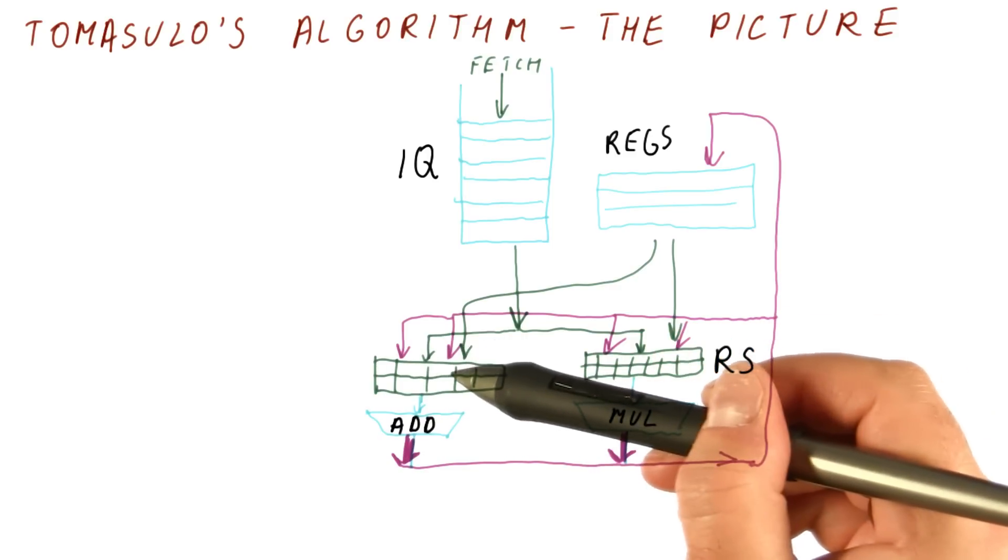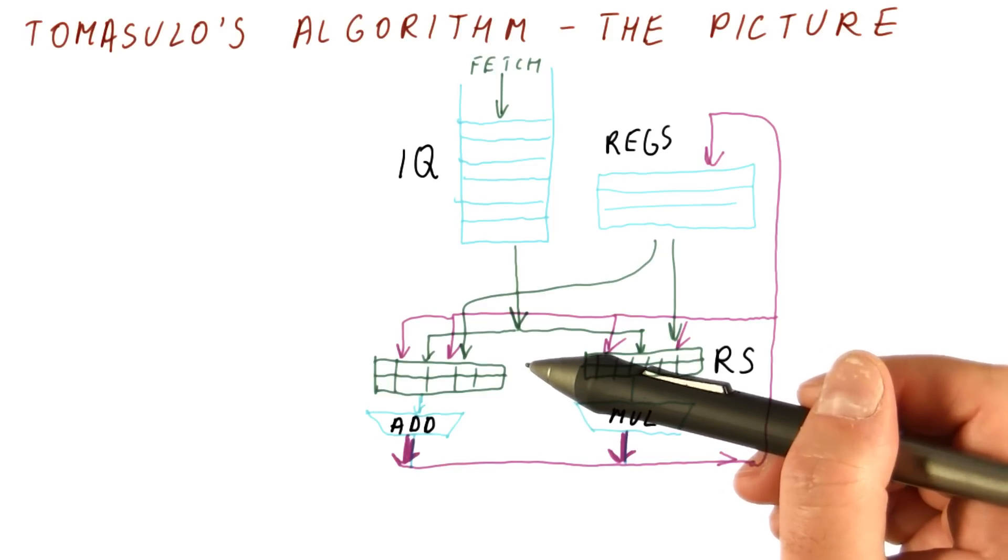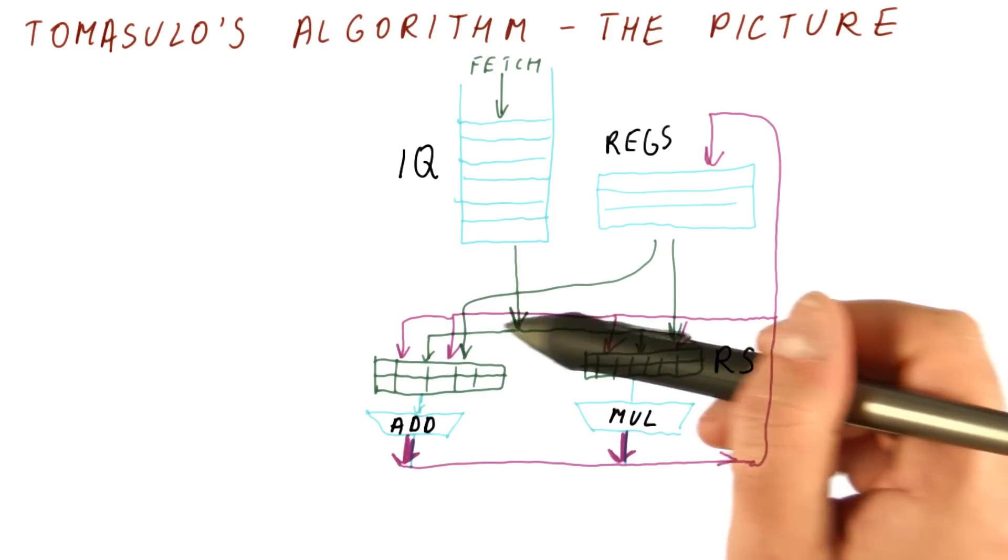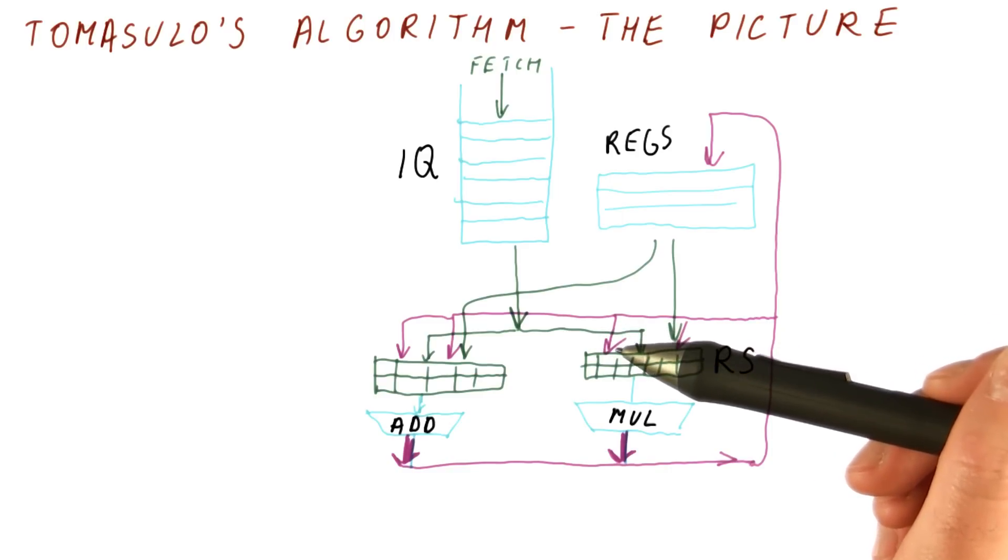So here you have some values that you already have in an instruction, some values that you're waiting for, and you know what you're waiting for. When the value is finally broadcast, you check for each value that is broadcast whether this is the one we are waiting for or not.